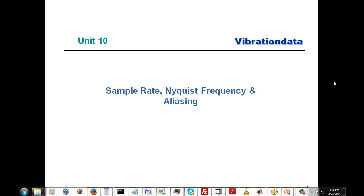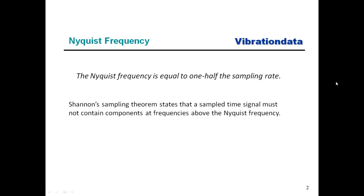The Nyquist frequency is equal to one-half the sample rate. The sample rate is sometimes represented in terms of samples per second, or hertz. Shannon's sampling theorem states that a sampled time history must not contain components at frequencies above the Nyquist frequency. If that rule is violated, we get aliasing in our signals — which, in terms of the optical analogy, looks like the ceiling fan blades are spinning backwards. That can be horribly misleading.